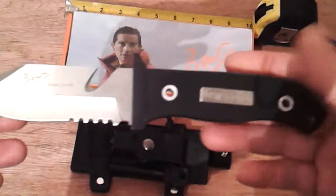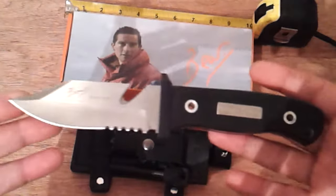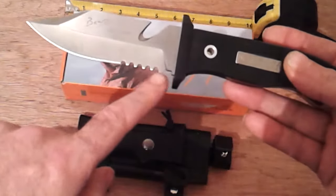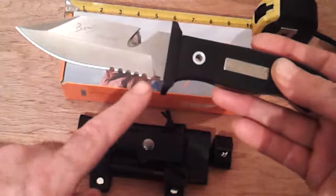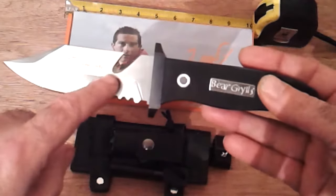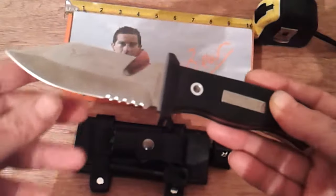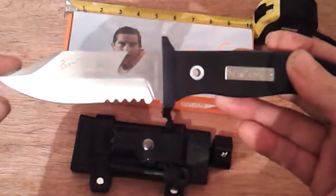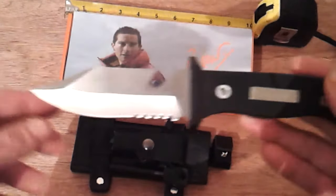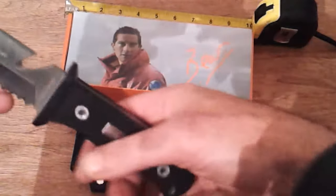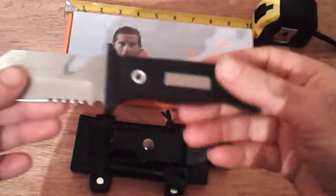You've got a four inch blade here, you've got serrated edge, you've got a safety belt cutter, rope cutter here, and a very sharp blade. I'm not sure what they call this point, if it's a drop point or whatever, but it's got a nice handle.